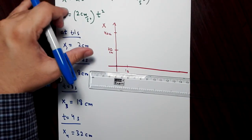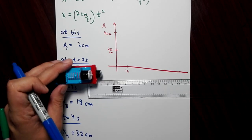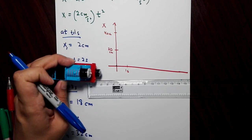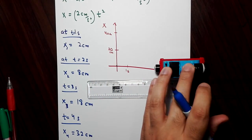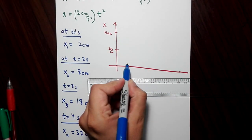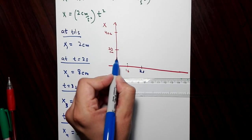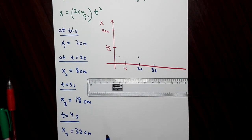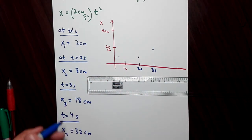If Thomas wants to follow this equation, he should start at x equals zero, then at t equals one second be at two centimeters, at t equals two seconds be at eight centimeters, at t equals three seconds be at 18 centimeters, and at t equals four seconds be at 32 centimeters. So at t equals two seconds, this is around eight — that's the second point. At t equals three seconds we get 18, so there's a point over here.